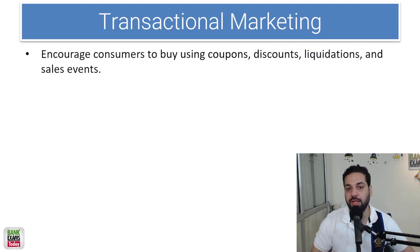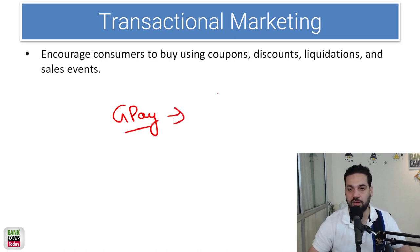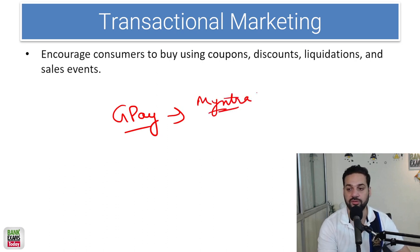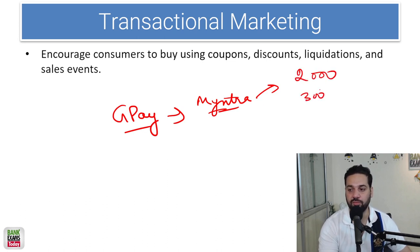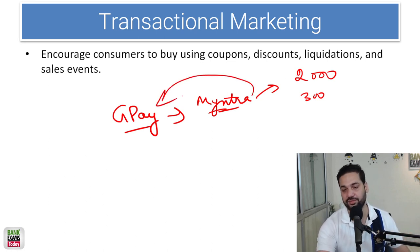Transactional marketing — when you are making a transaction, companies like Google Pay give you coupons and discounts you can use later. For example, whenever you make a Google Pay payment, they give you Myntra coupons — shop for 2,000 rupees and get a 300 rupee discount. Google is making money out of it because Myntra makes sales and pays Google Pay a commission. That is transactional marketing.